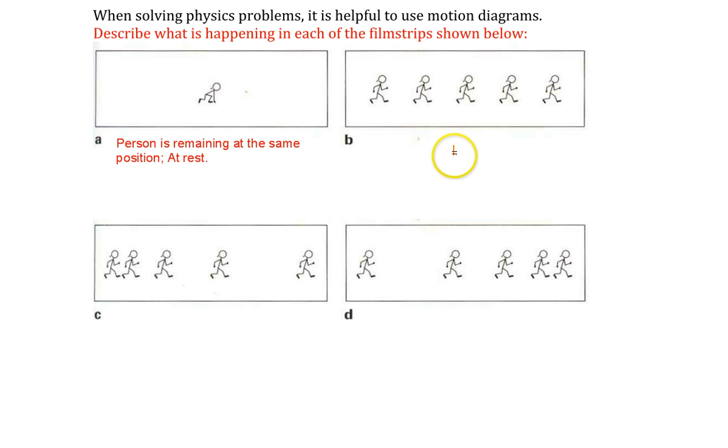What about B? Looking at B, you can see that all the images are equally spaced. So hopefully you recognize that this person is moving at constant speed.